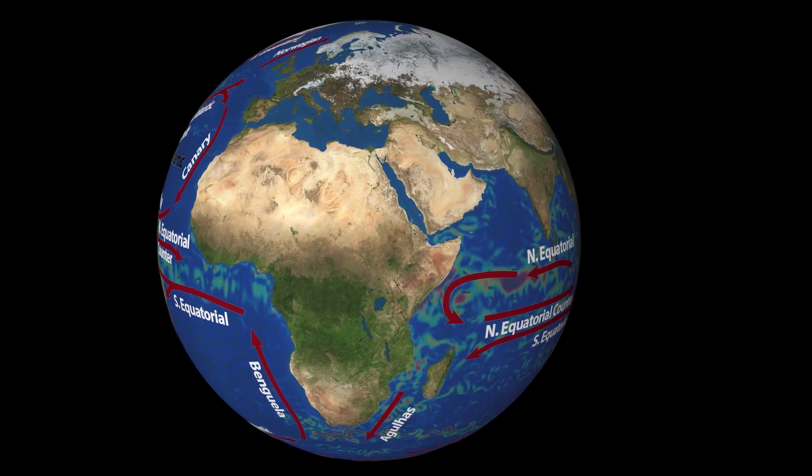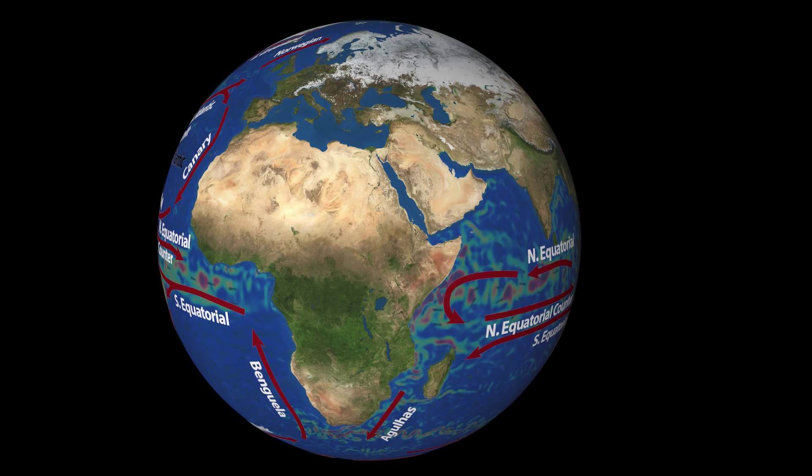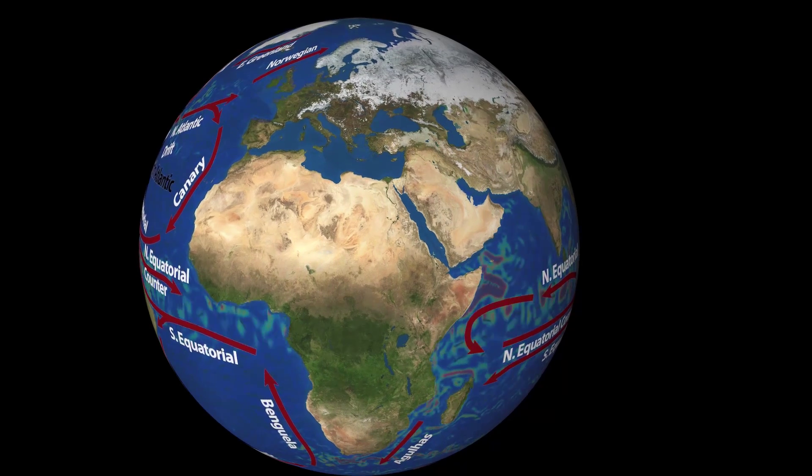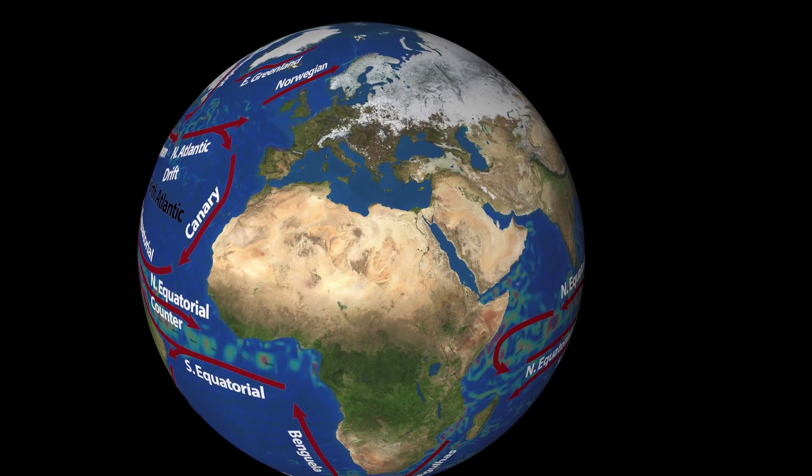The surface currents on either side of the equator are dominated by the westward flowing north and south equatorial currents. They are separated by an equatorial counter current which flows to the east.